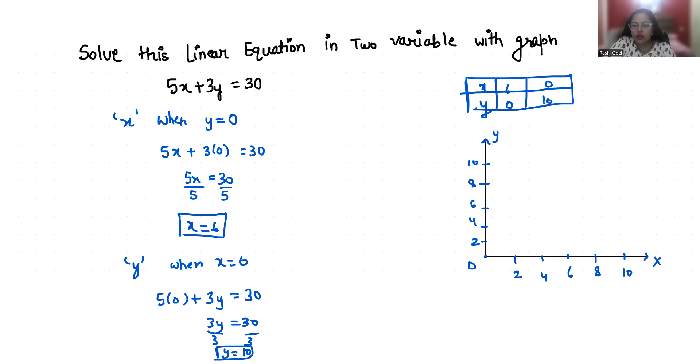Our first coordinate is (6, 0), where x is 6 and y is 0. Next is (0, 10), where x is 0 and y is 10. These are the points where the line intersects the axes.